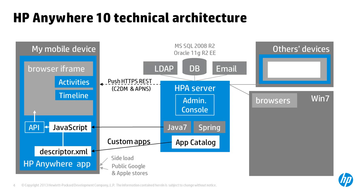An admin console on the HPA server provides an HTTP web interface to manage deployments, permissions, and processing parameters, along with a central enterprise portal. This structure enables fine-grained role-based access control of custom apps and their data.